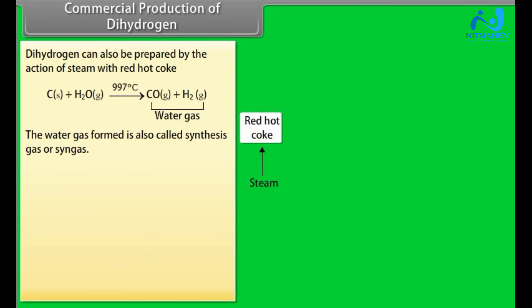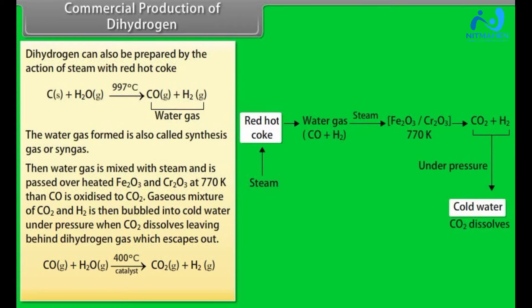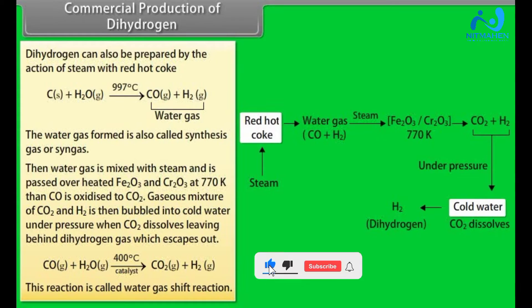Commercial production of dihydrogen. Dihydrogen can be prepared by the action of steam with red hot coke. The water gas formed is also called synthesis gas or syngas. Then water gas is mixed with steam and is passed over heated Fe2O3 and Cr2O3 at 770 Kelvin, then CO is oxidized to CO2. Gaseous mixture of CO2 and H2 is then bubbled into cold water under pressure when CO2 dissolves leaving behind dihydrogen gas which escapes out. This reaction is called water gas shift reaction.